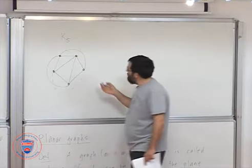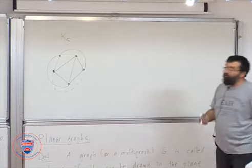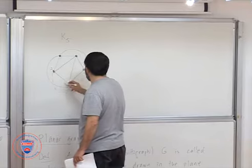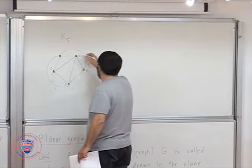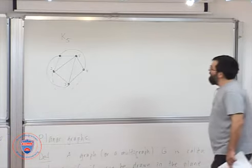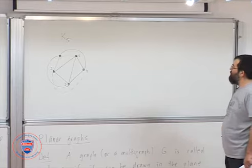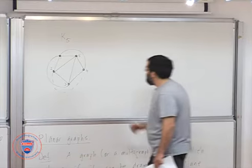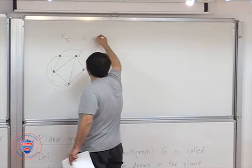So with K5, you should be having an edge between any two vertices, right? For one, two, three, four, five. And I could only draw nine of them. I couldn't draw the last one. So K5 is not planar.